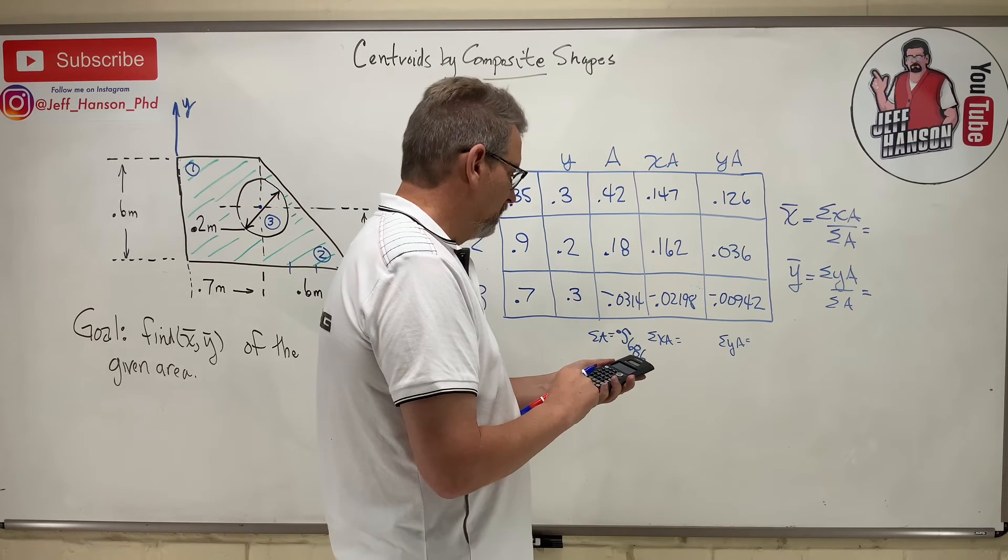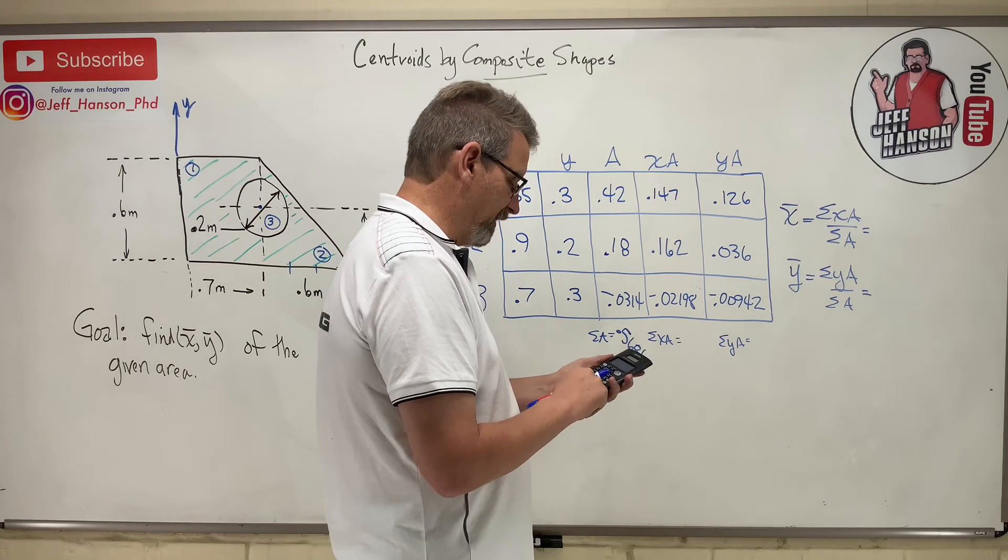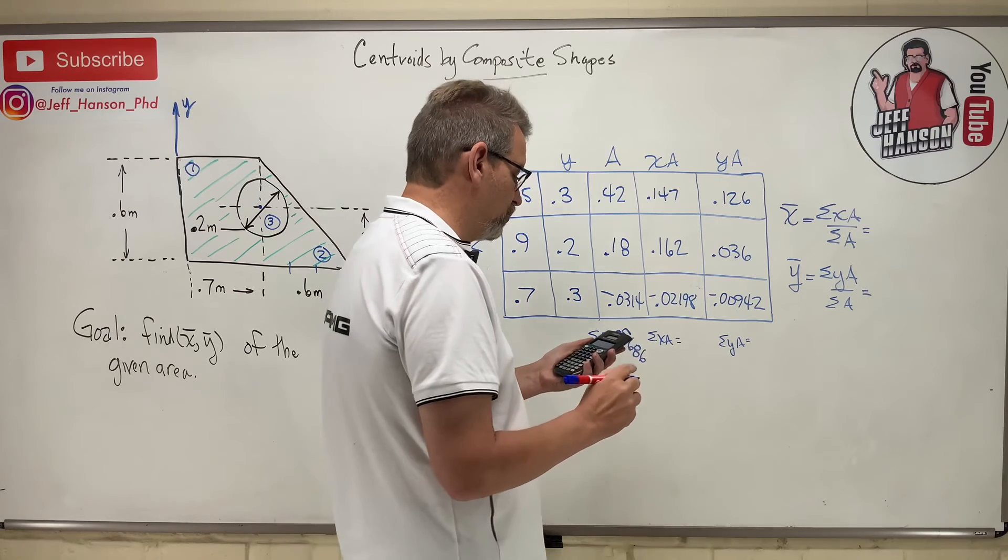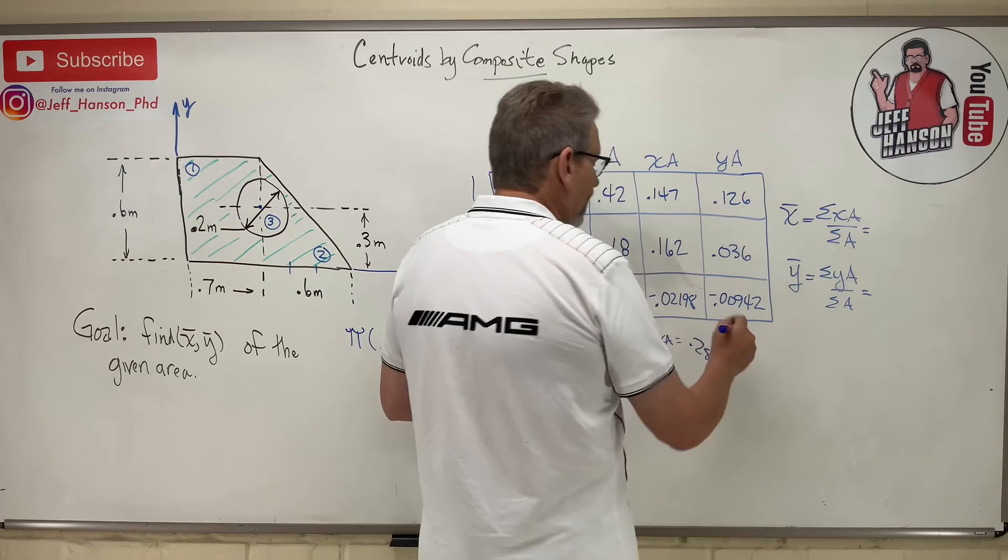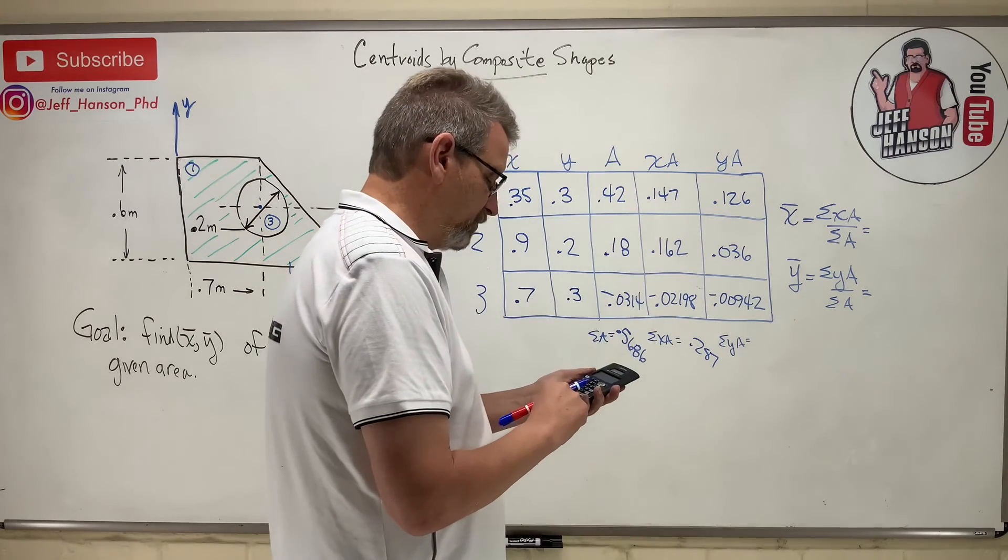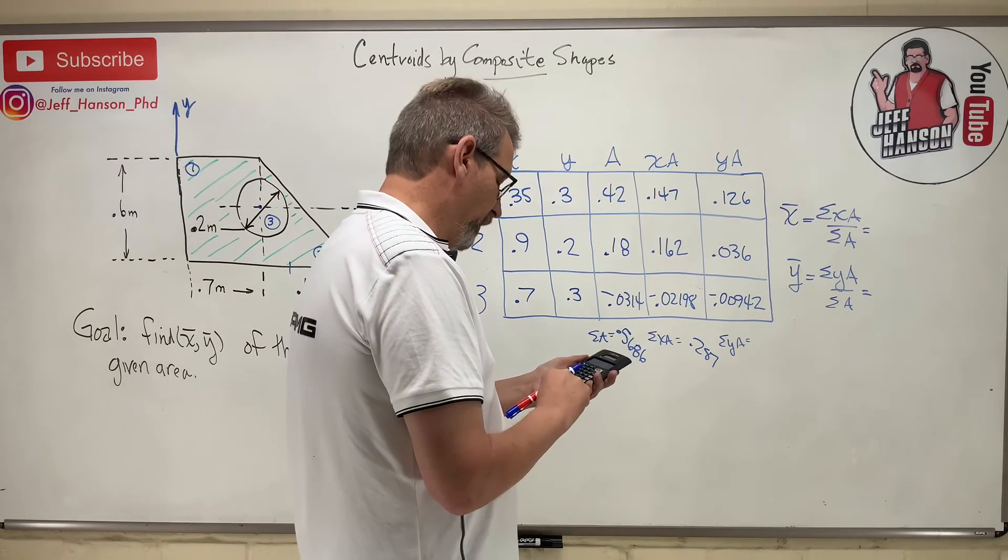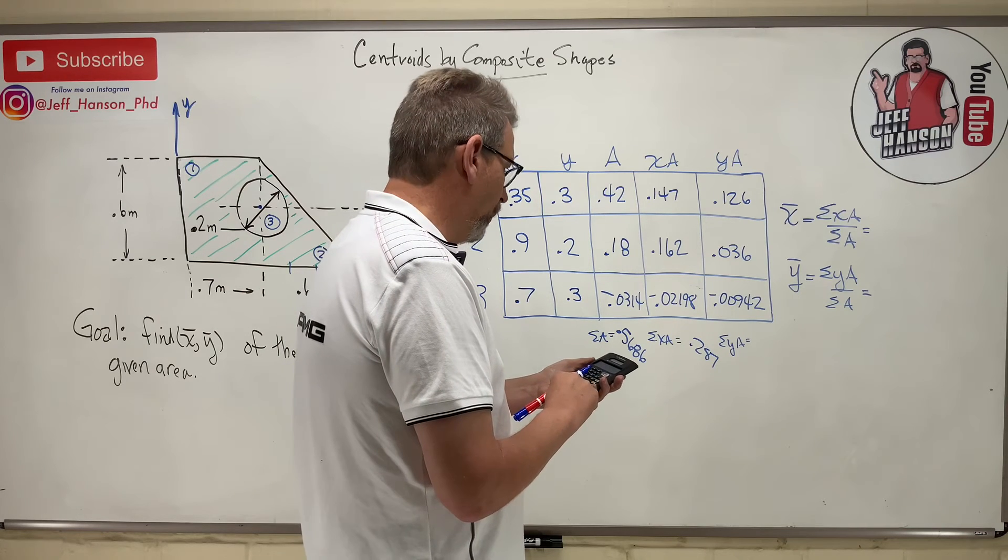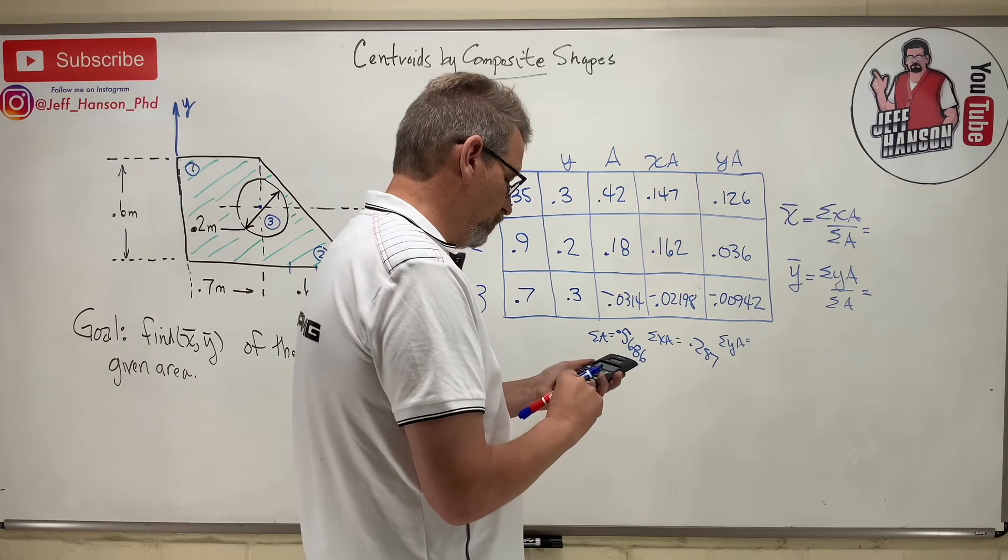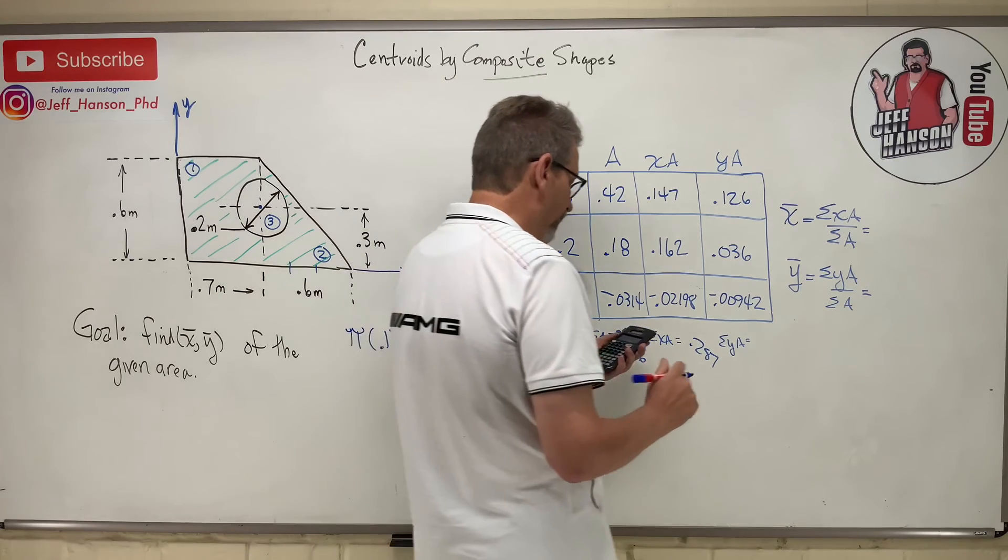And then the sum of the Y·A's: 0.126 plus 0.036 minus 0.00942 is 0.153.